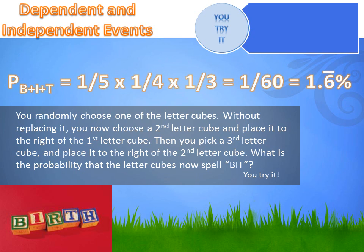We calculate the probability of drawing B, then I, then T by multiplying each probability in sequence. P(B) is one in five — one way to win out of five cubes. Multiply by P(I): since we removed B and didn't replace it, there are four cubes left with one I, so P(I) is one in four. Then P(T): we removed B and I, leaving three cubes with one T, so P(T) is one in three. The probability of drawing B then I then T is one-fifth times one-fourth times one-third, or 1 over 60, or 1.6 repeating percent.